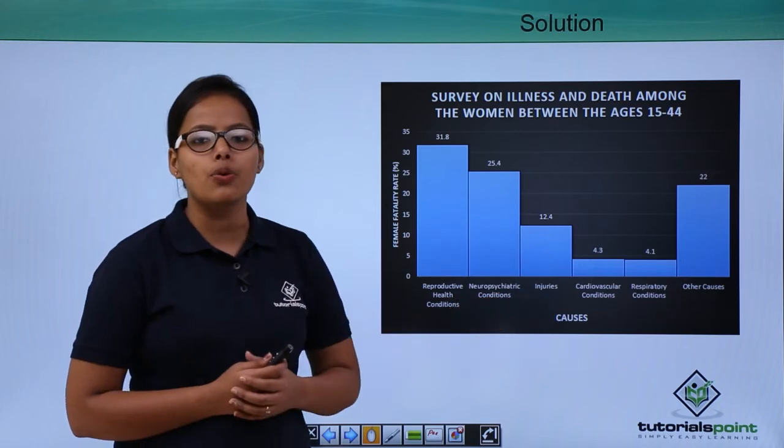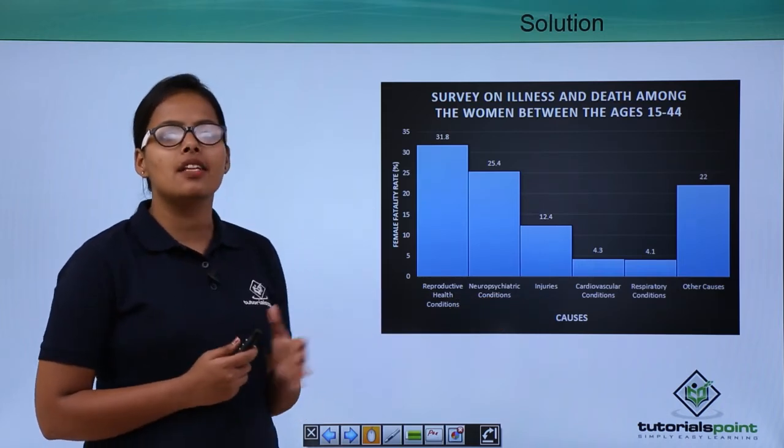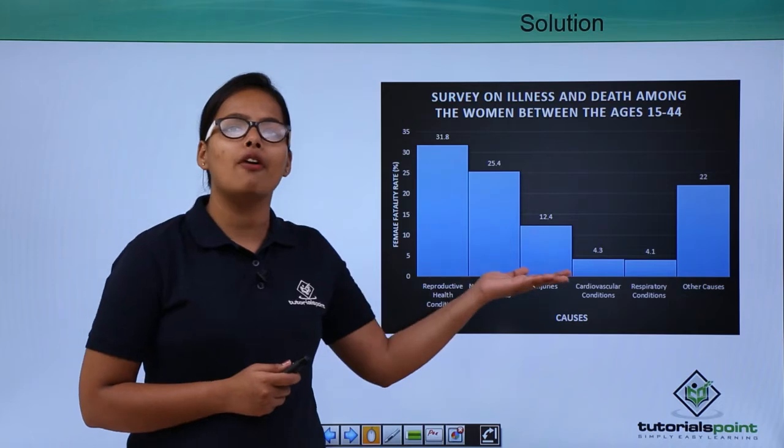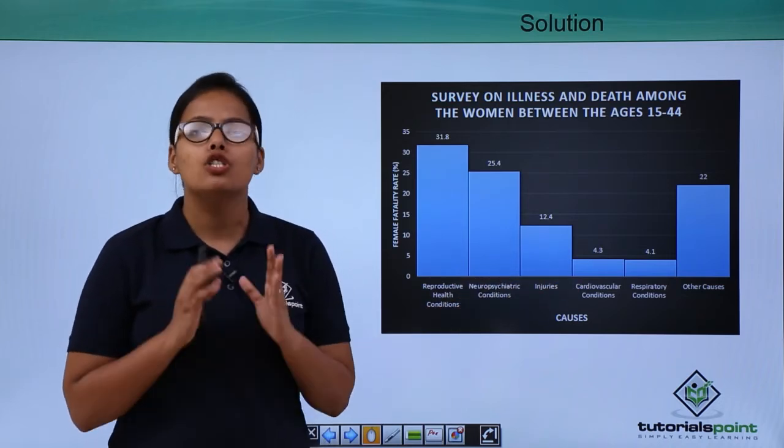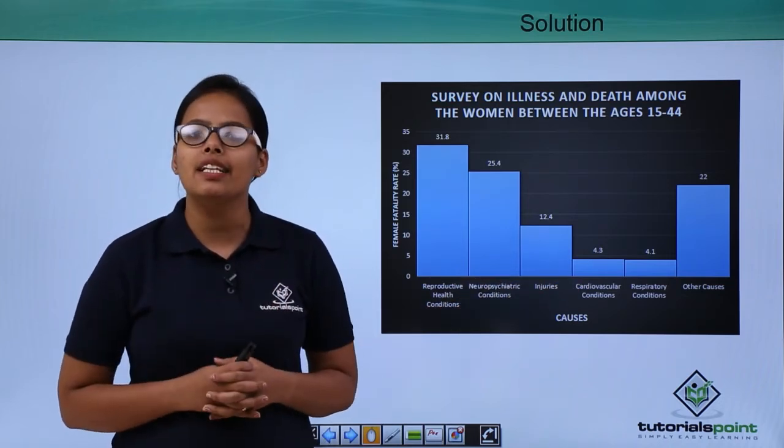The x-axis represents the causes and the y-axis represents the female fertility rate. That's how we've plotted this bar graph so you can analyze the data easily.